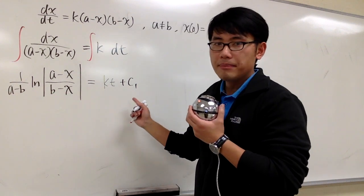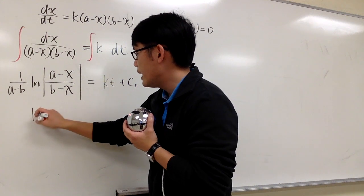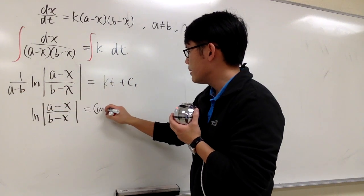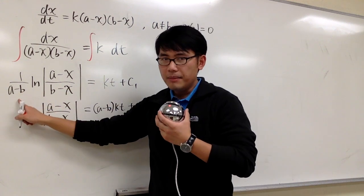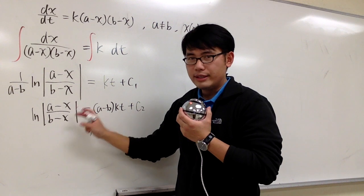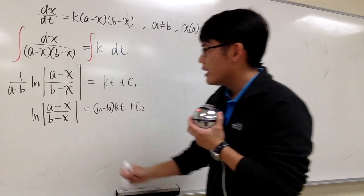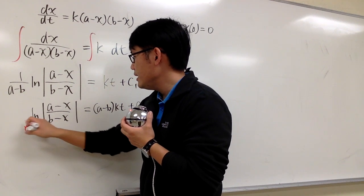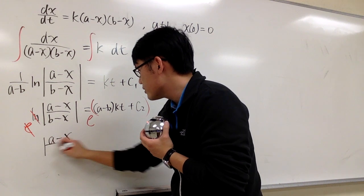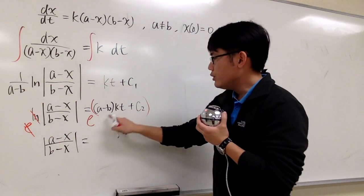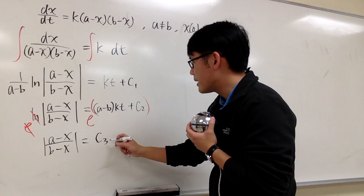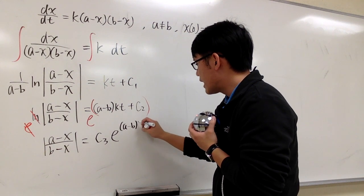Let's multiply everything by (a minus b) to get rid of that factor. So we get ln of the absolute value of (a minus x) over (b minus x), equals (a minus b)kt plus c2, where c2 absorbs the constant (a minus b)c1. Our goal is to isolate x, so we get rid of the ln by exponentiating both sides. We get the absolute value of (a minus x) over (b minus x) equals c3 times e to the (a minus b)kt, where e to the c2 is folded into the constant c3.